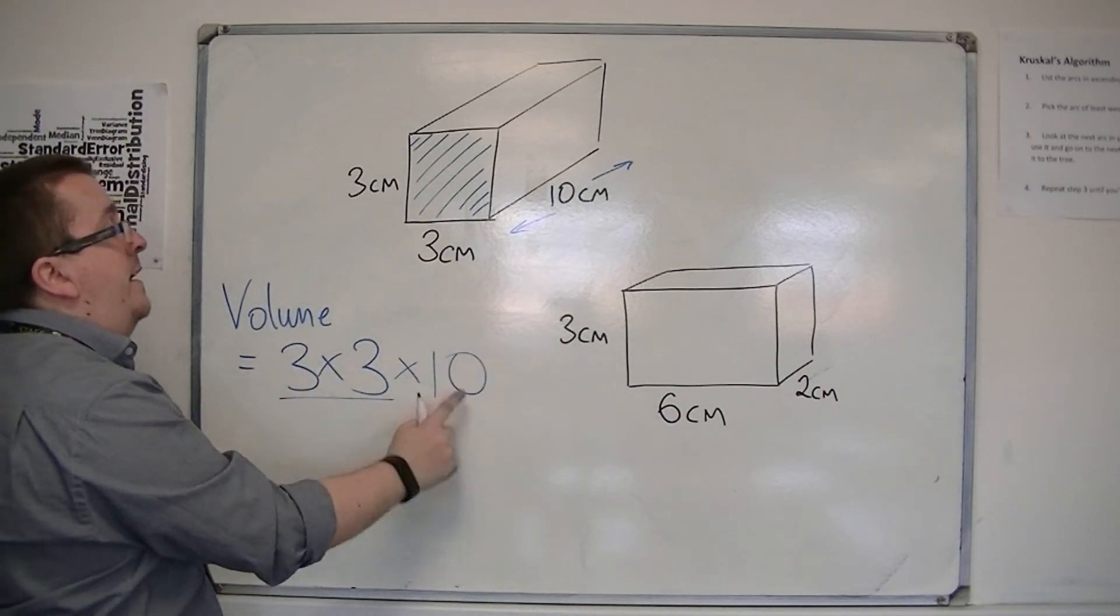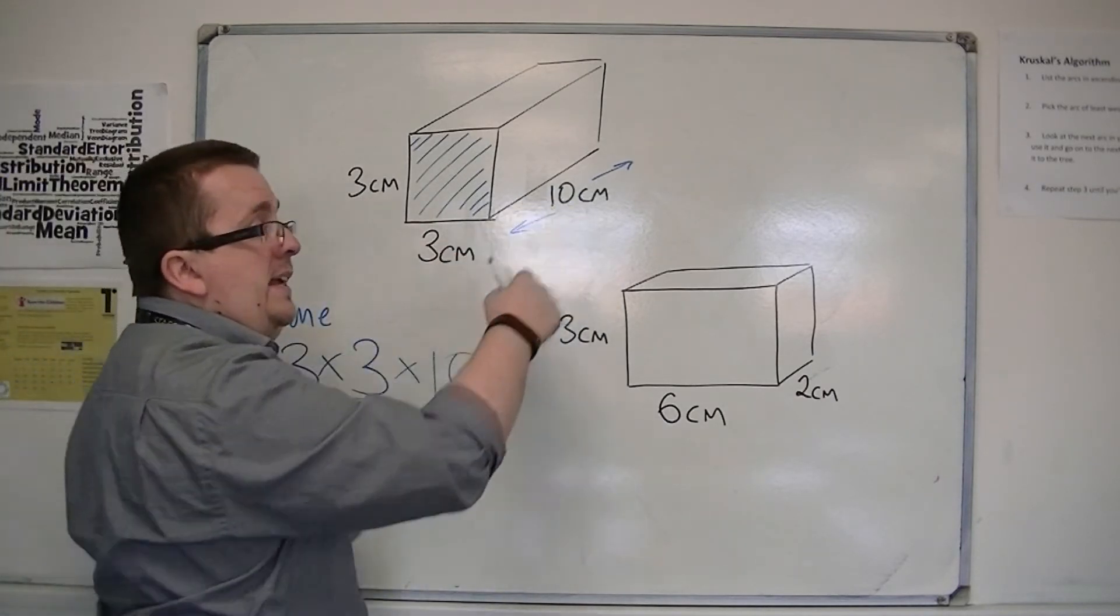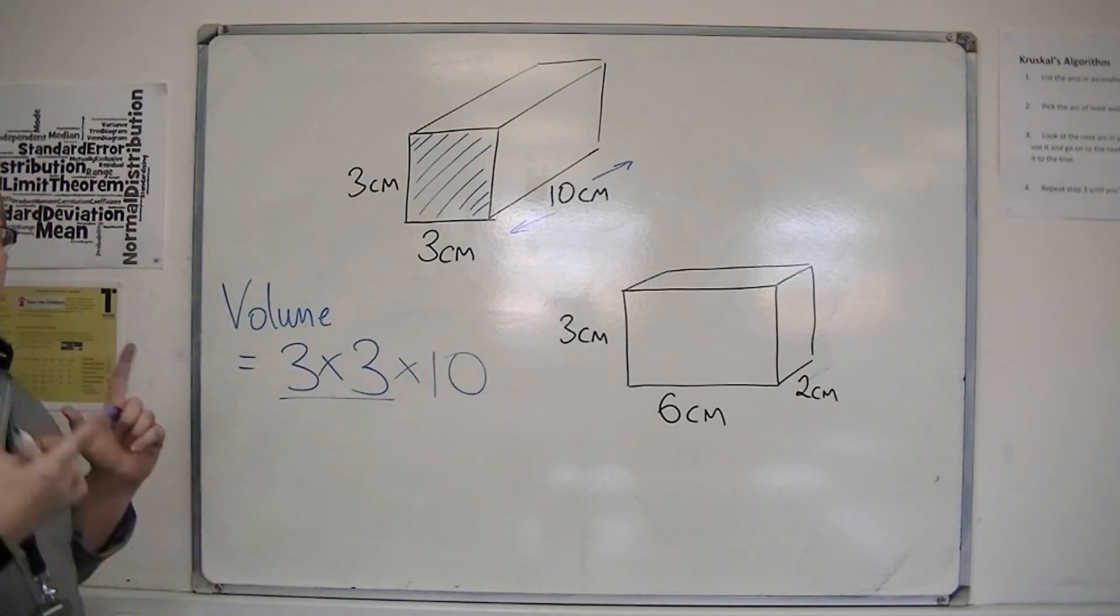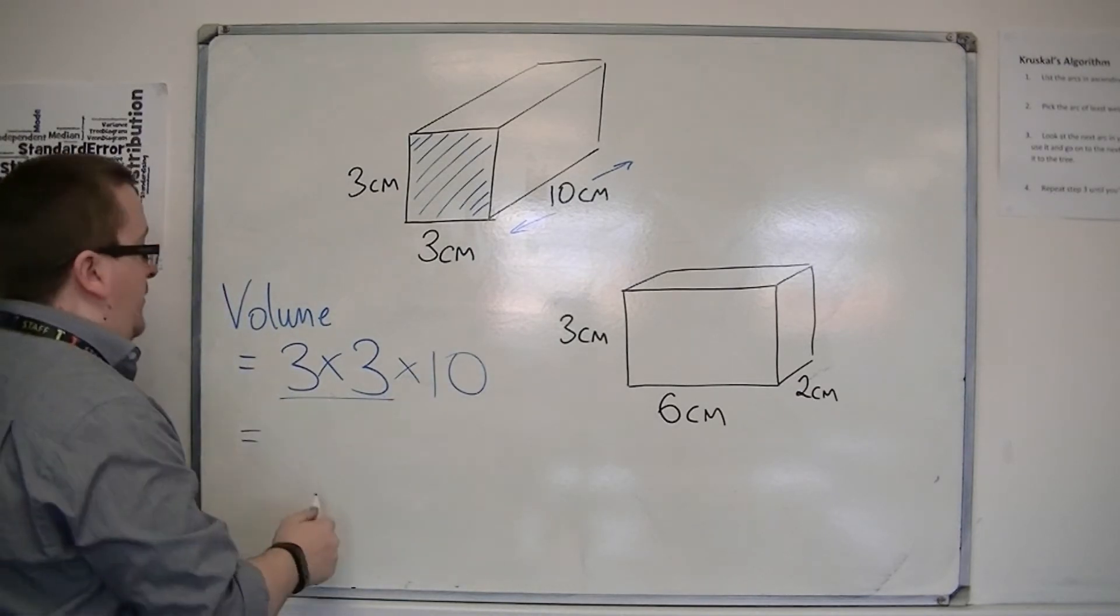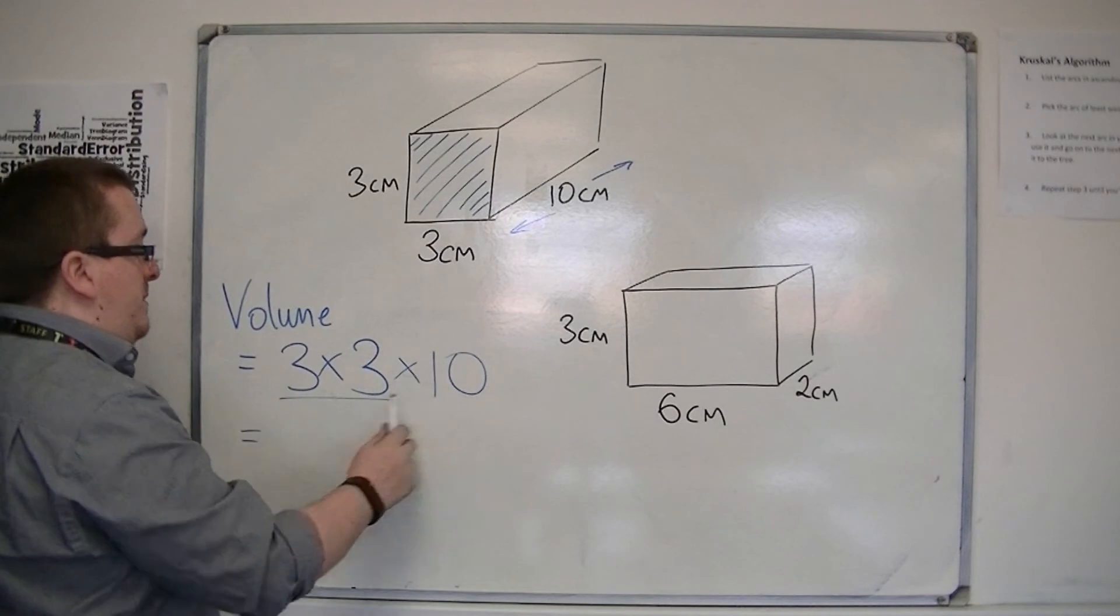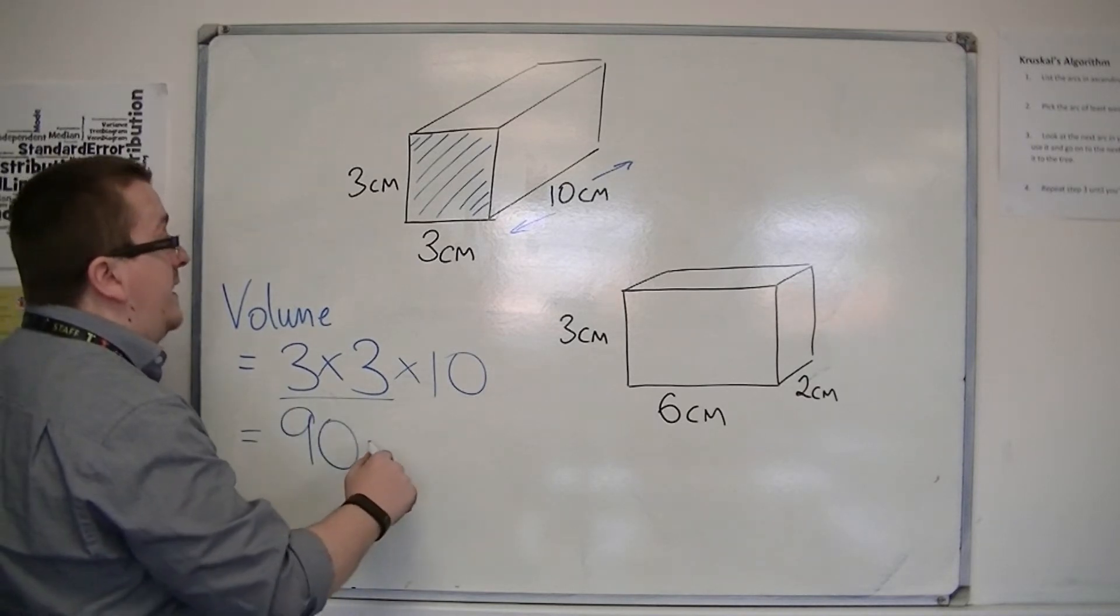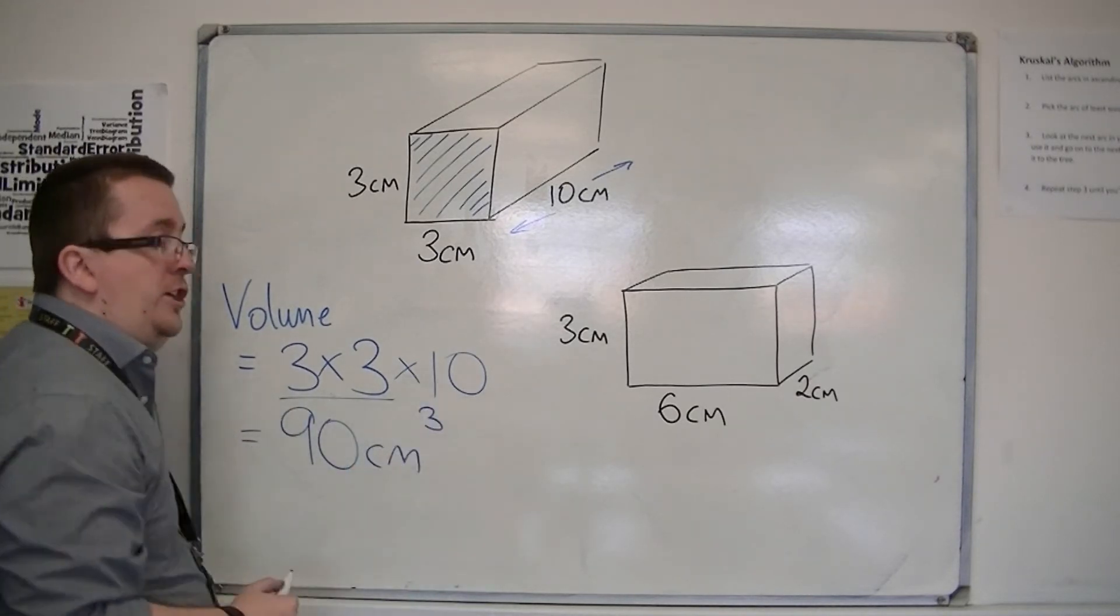So three times three times ten. So it's effectively the three distances multiplied together. So three times three is nine, times ten is ninety. So it's ninety, and the units will be centimetres cubed.